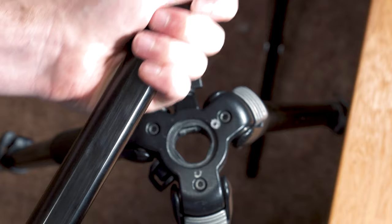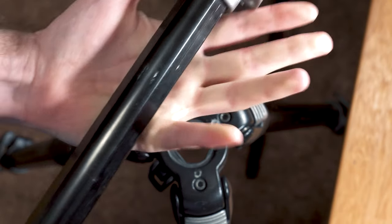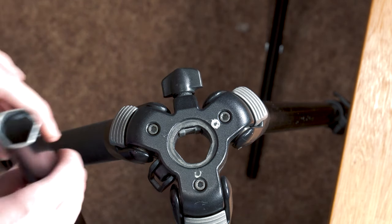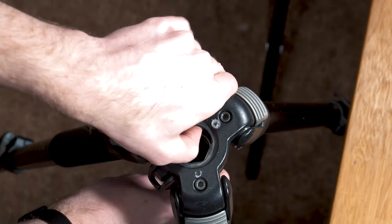Of course, you can't tighten it too much because it'll just turn in your hands because it's aluminum and slippery. But what we'll do next is we'll take the center column and we'll just put it in upside down.